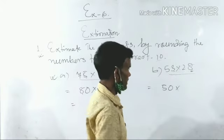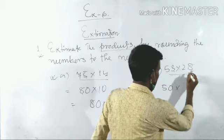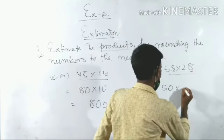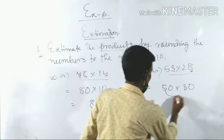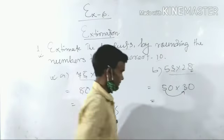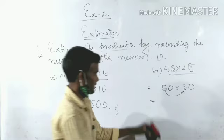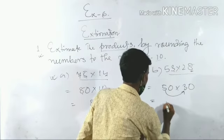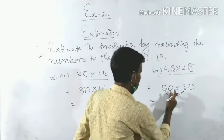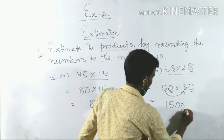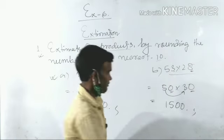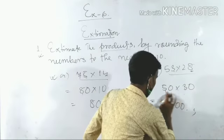The next number is 28: one ten, the next number is 8. Eight is greater than 5, so it is 30, not 20. Now multiply 5 × 3, which is 15. How many zeros are left? Here is one and here is one, so two zeros. Write 1500.